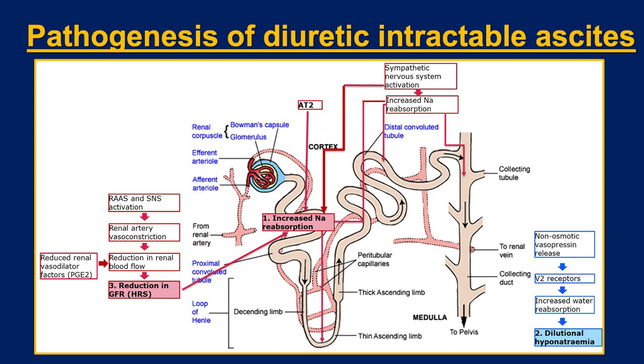The first is that sodium and water reabsorption happens in the proximal convoluted tubule, which is upstream of the action of furosemide and spironolactone, the two commonest diuretics we use. The other factor is renal hyperperfusion and a consequent reduction in glomerular filtration rate causing rising creatinine and type 2 HRS, which limits our use of diuretics. The last one is dilutional hyponatremia due to the non-osmotic release of arginine vasopressin and disproportionate reabsorption of water in the collecting duct. It's a quite complex part of the physiology of the condition.